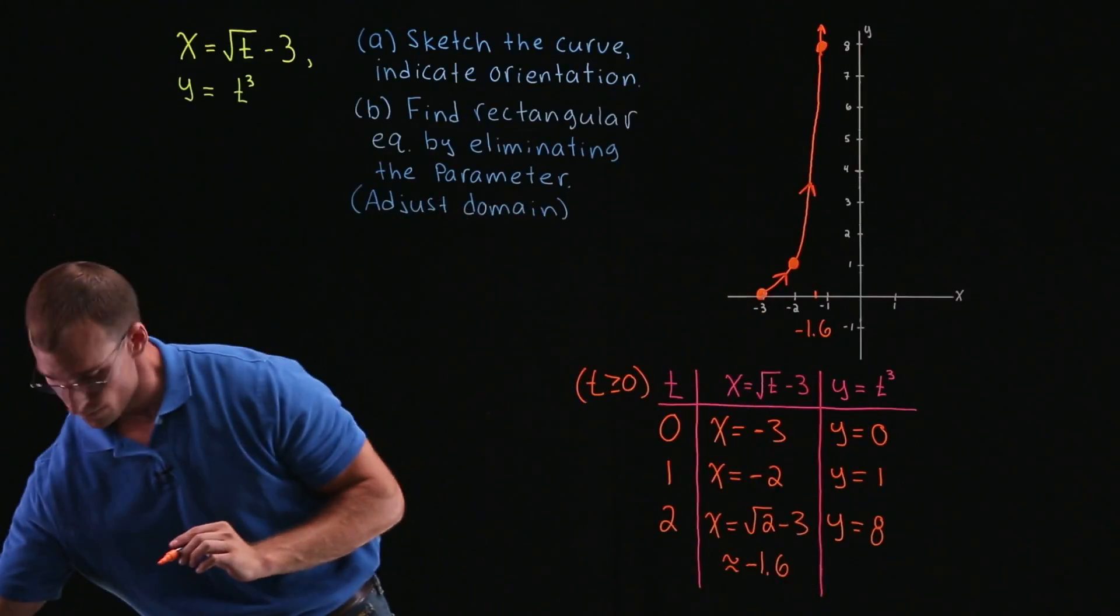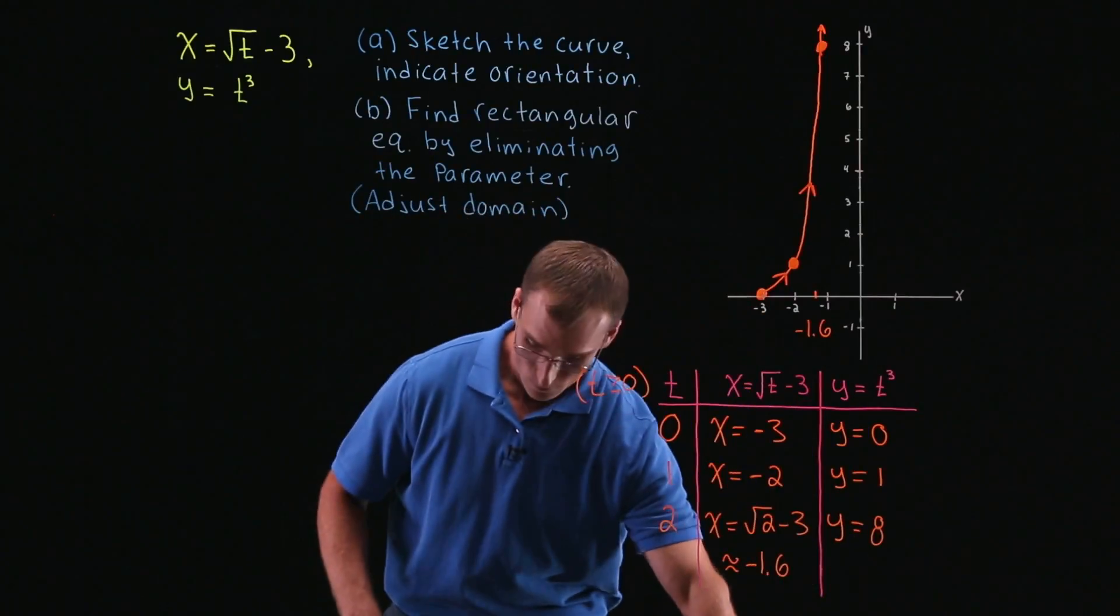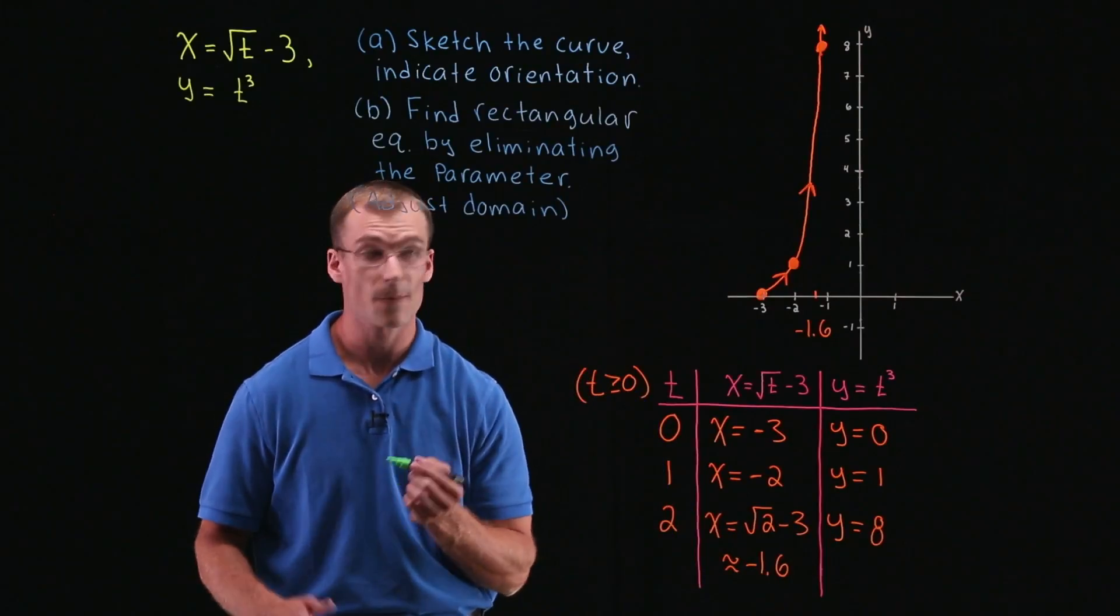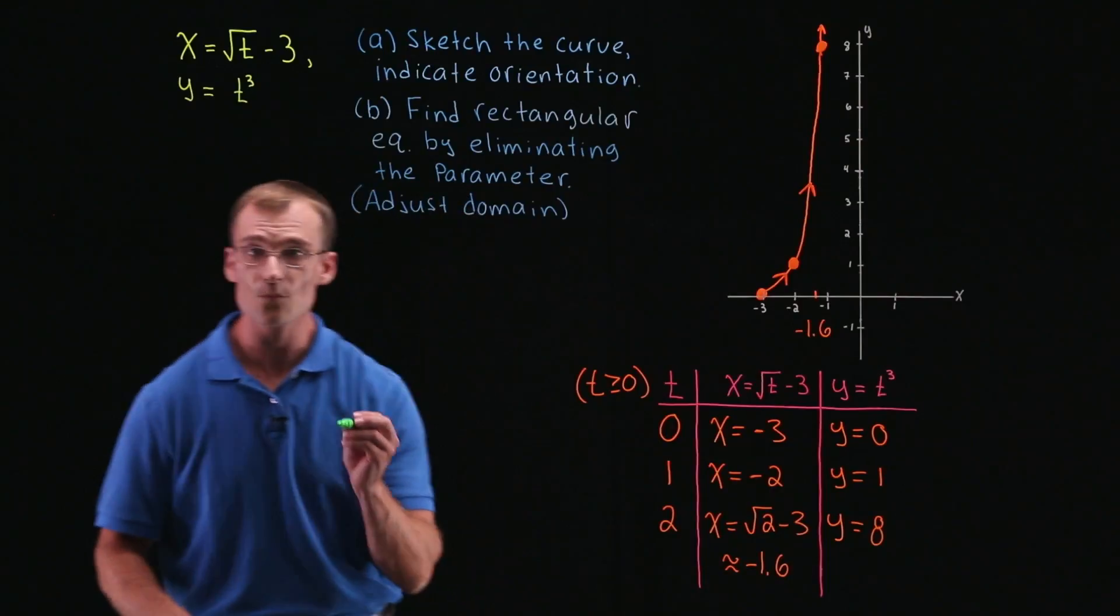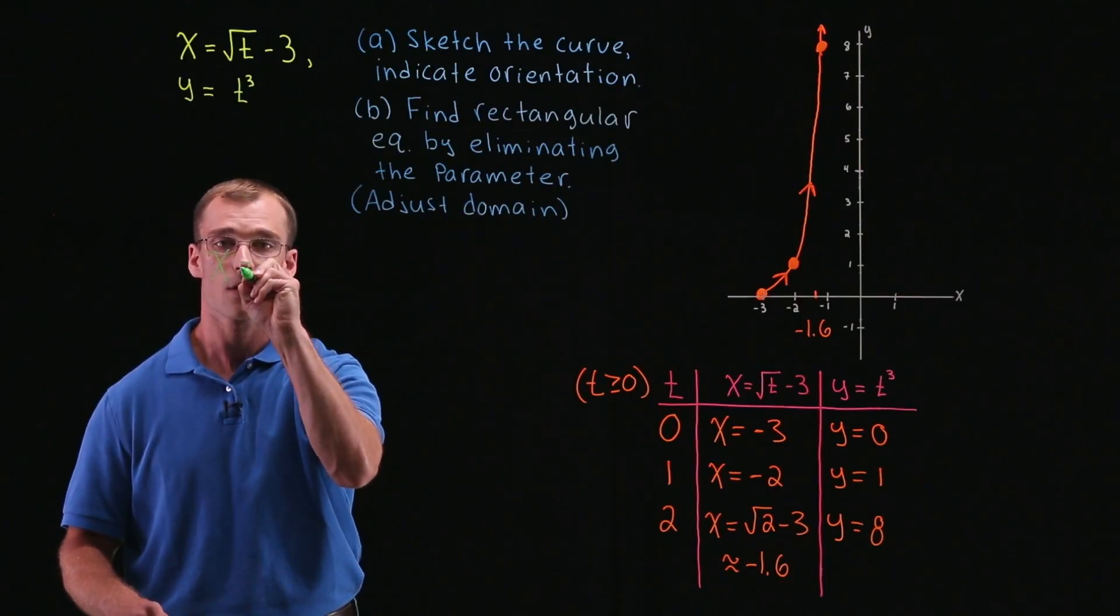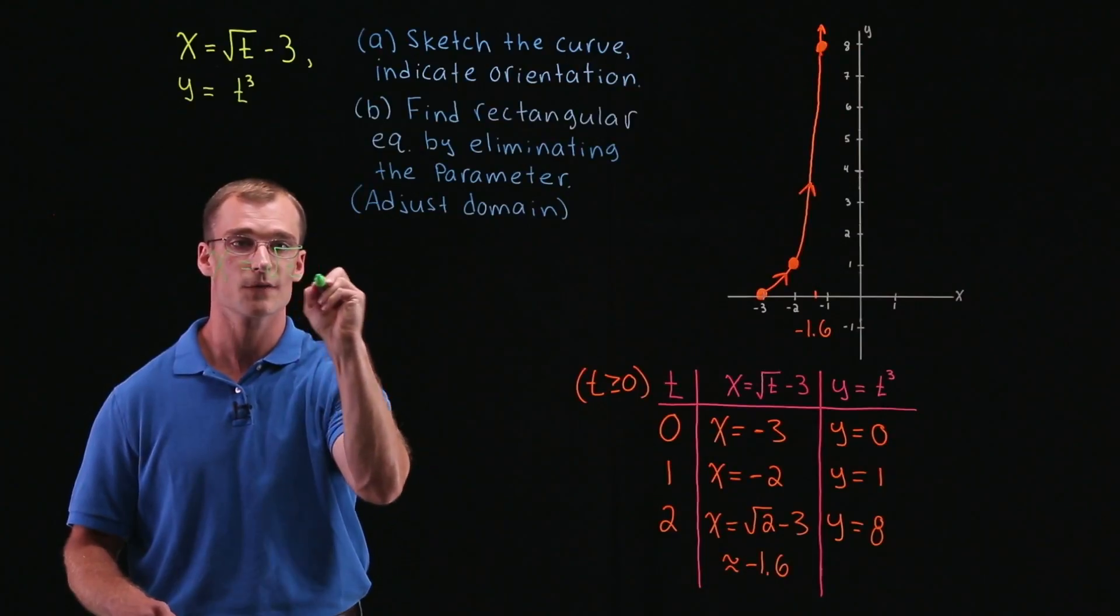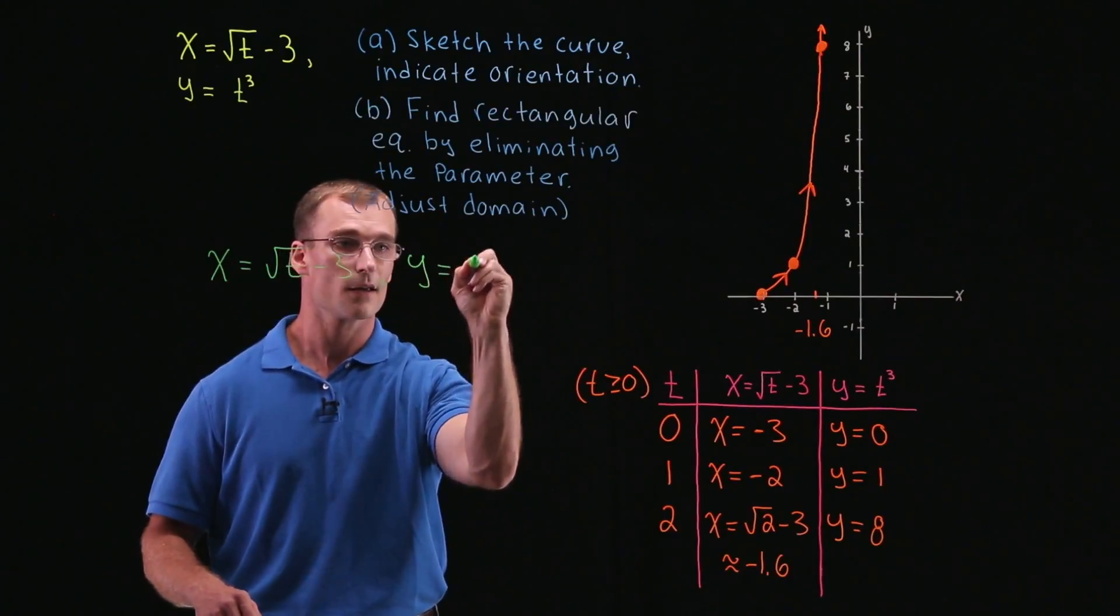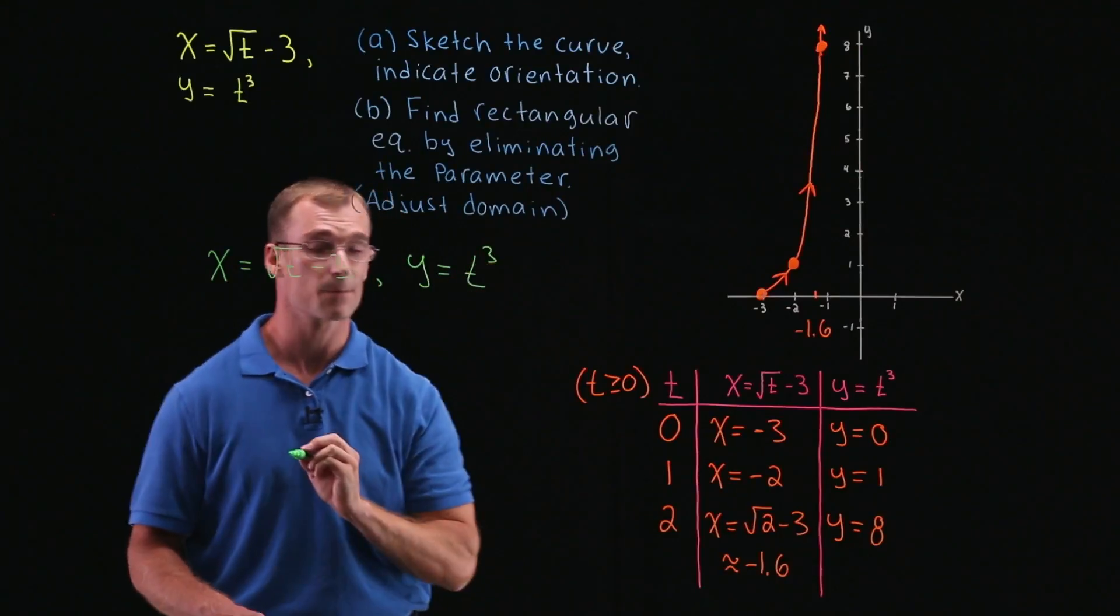So for part b, we're going to find the rectangular equation by eliminating the parameter. So again, how we do that when we have x is equal to square root of t minus 3, and y is equal to t cubed again.